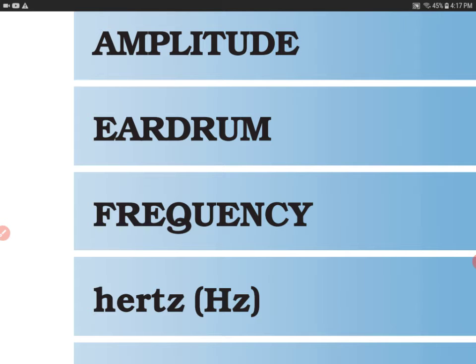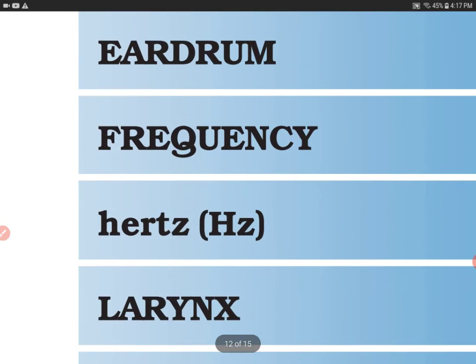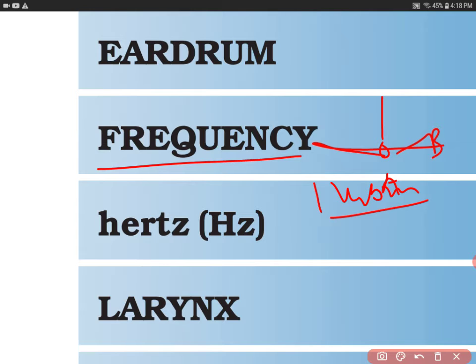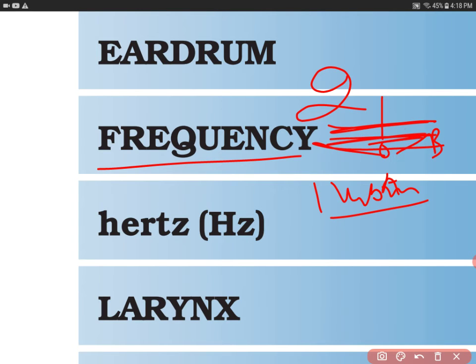The next term is frequency. Frequency is the number of vibrations made in one second. If the bob goes from mean position to A, then to B, then back to A, that counts as one vibration, meaning one frequency. If an object completes two such cycles in one second, its frequency is 2. If it completes five cycles per second, its frequency is 5.